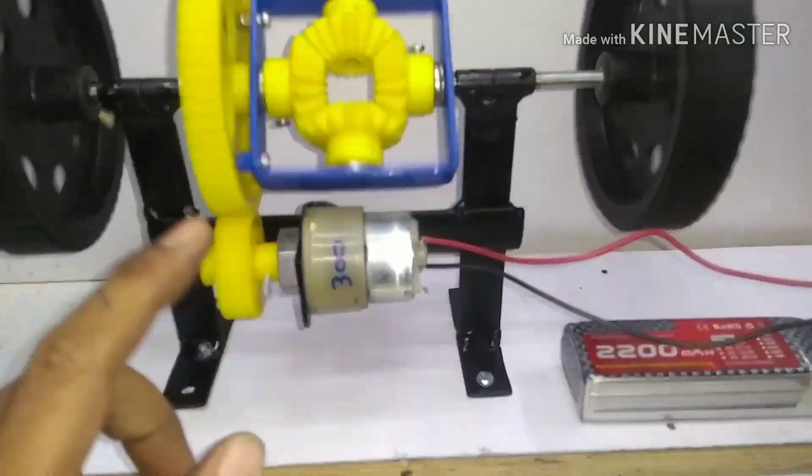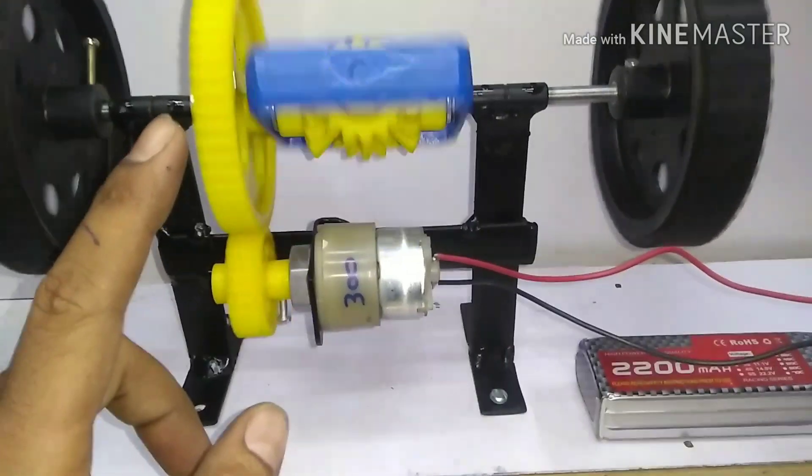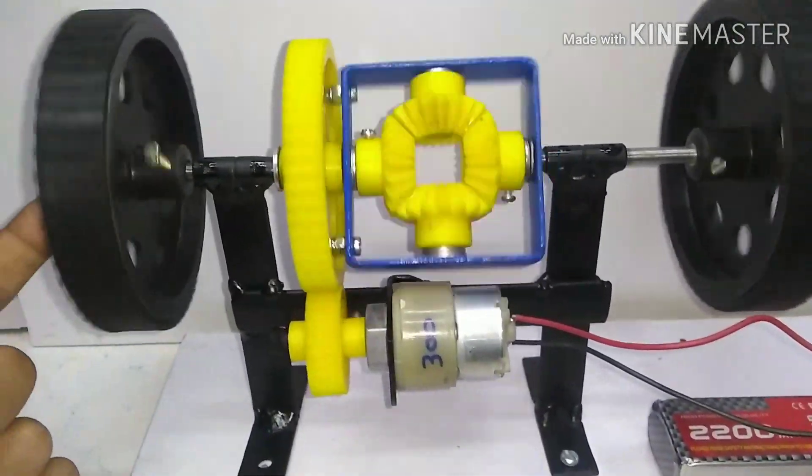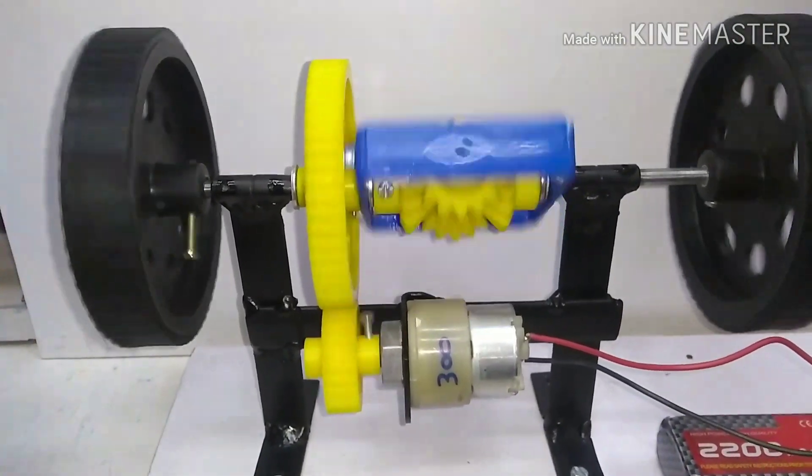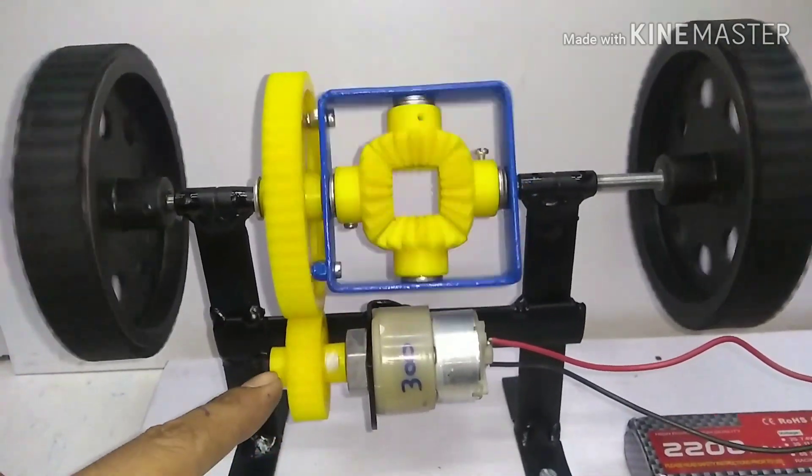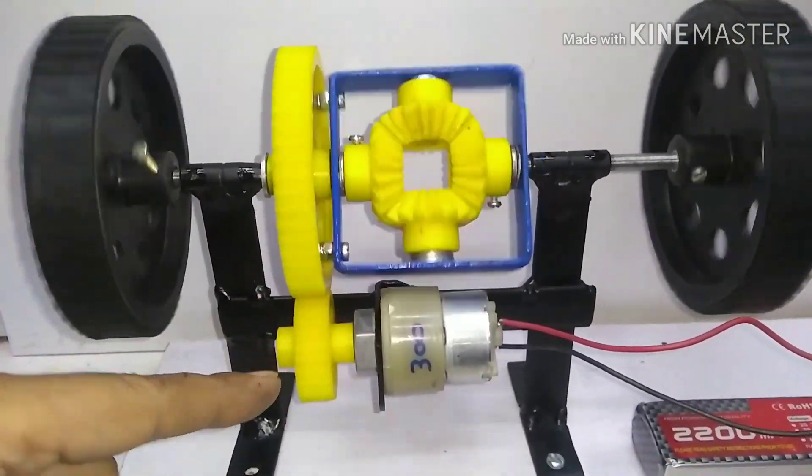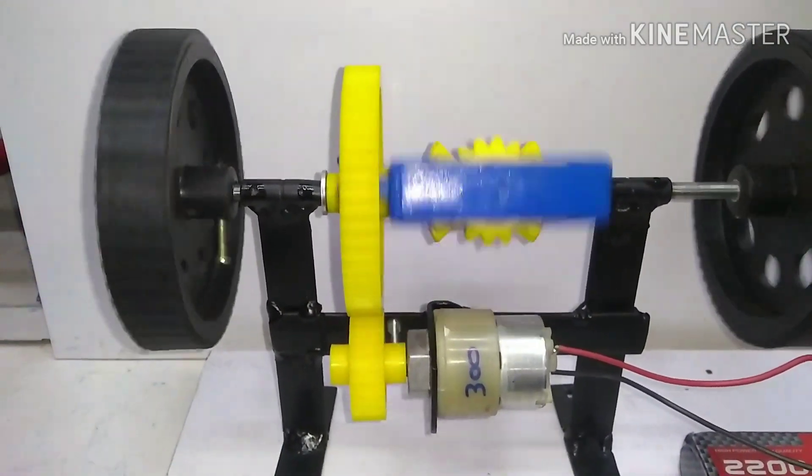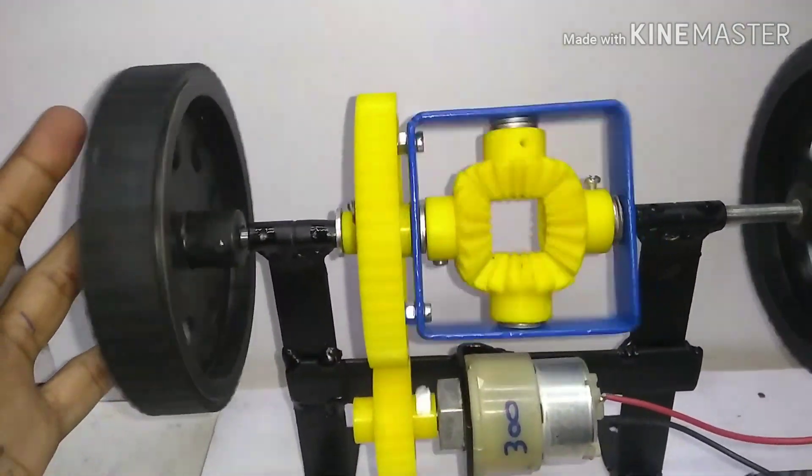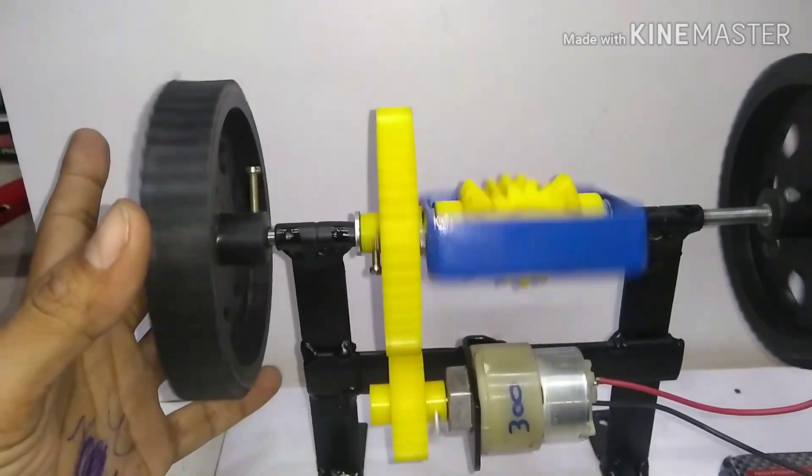The final RPM I'm getting on the wheel is about 130 RPM because the gear ratio is 2.24 between these two. So the advantage of this mechanism is if one wheel gets stuck...